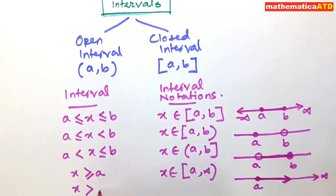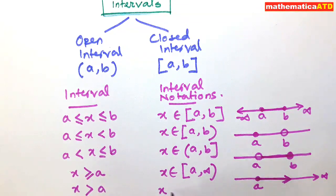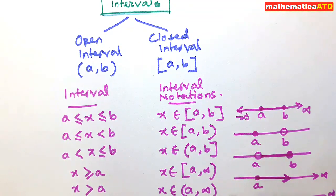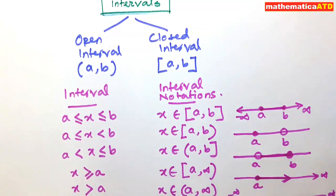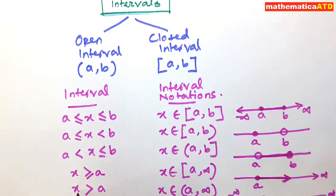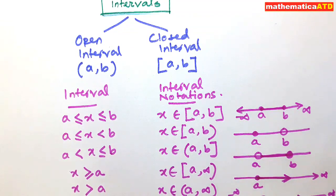Next, if x > a, then in interval notation we write x belongs to the open interval (a, ∞). On the real line, a is not included, so it is shown as a white ball. All real values to the right of a are taken. So x belongs to the open interval (a, ∞).